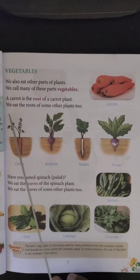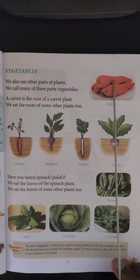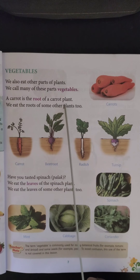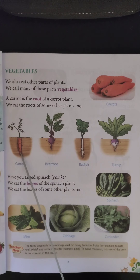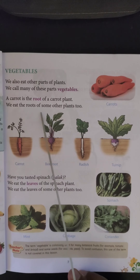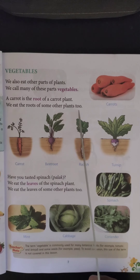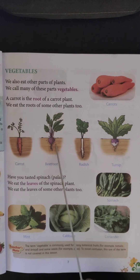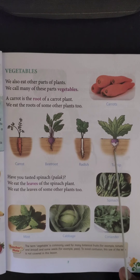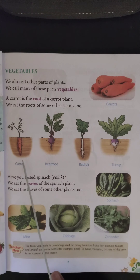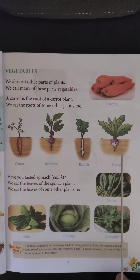One example given here is carrot. Carrot is a root of the carrot plant. We eat the roots of some other plants too, like beetroot, radish, and turnip. So these are all actually roots which can be used as vegetables in our food.